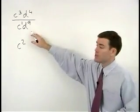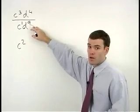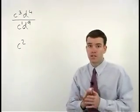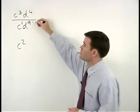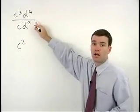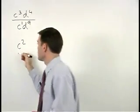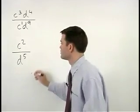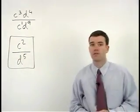For our Ds, notice that the exponent on the D is greater in the denominator than it is in the numerator. In this situation, we still take the difference between the exponents and the difference between 9 and 4 is 5, but the D to the fifth will go in the denominator of the answer. So we have C squared over D to the 5th.